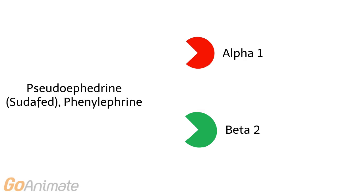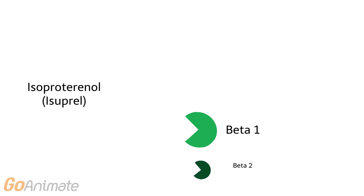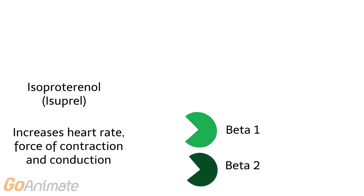Pseudoephedrine affects alpha-2 and beta-2 receptors and is used as a nasal decongestant. Isoproterenol affects the beta-1 and beta-2 receptors and works to increase the heart rate, force of contraction, and conduction.